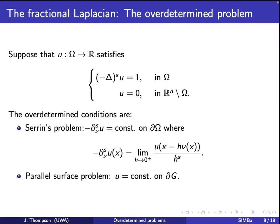We have two different over-determined conditions to look at. One is the analog of Serrin's problem: we assume this term is constant on the boundary, which is essentially the Neumann derivative for the fractional Laplacian. However, solutions of this equation are not linear at the boundary — they're only Hölder continuous — so the usual Neumann derivative is plus or minus infinity. Instead, you have to consider a Hölder Neumann derivative.